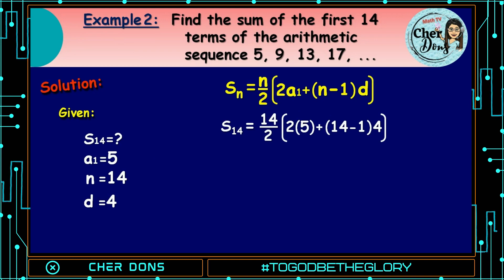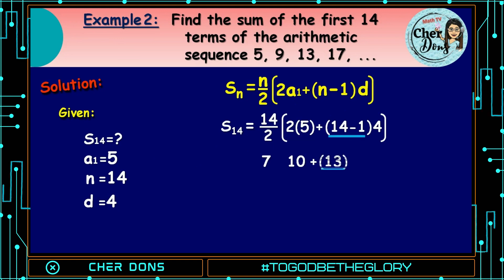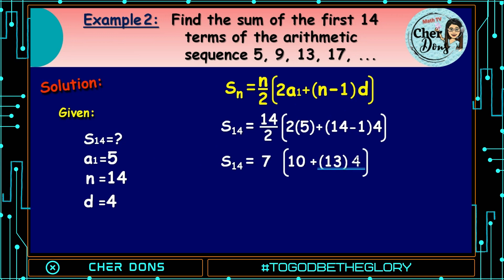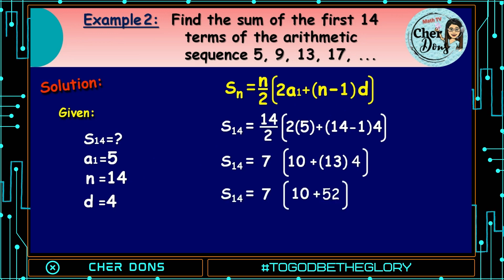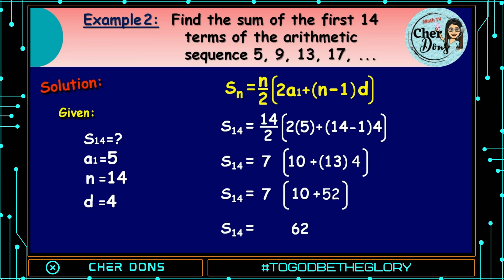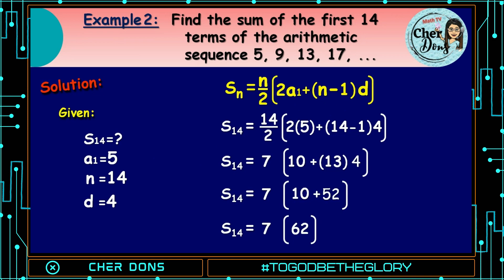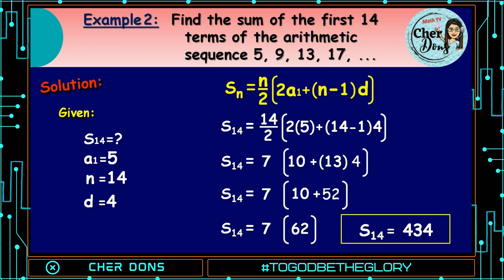S of 14 is equal to 14 over 2 — that is 7 — multiplied by 2 times 5, that is 10, plus quantity 14 minus 1, that is 13, multiplied by 4. So S of 14 is equal to 7 multiplied by (10 plus 52), which is 62. S of 14 is equal to 7 times 62, that is 434. Therefore, the sum of the first 14 terms is 434.